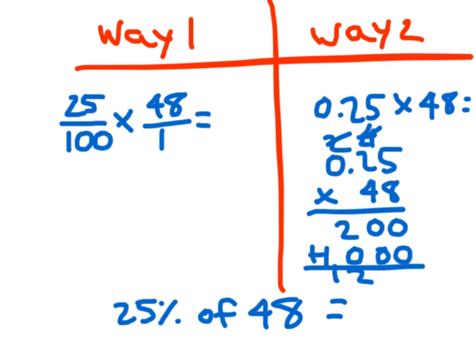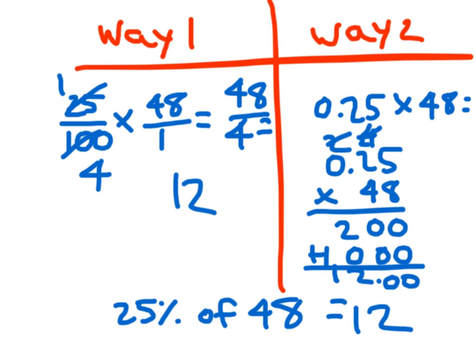Adding them together I get 1, 2, 0, 0. 2 decimal places. 25% of 48 is 12. 25 hundredths times 48: 48 fourths, 48 divided by 4 is 12. Which way looks easier? I think that the way on the left, my way 1 with the multiplying fractions, actually got my answer a little bit quicker than the other way. Remember there's always more than one way to solve a problem.